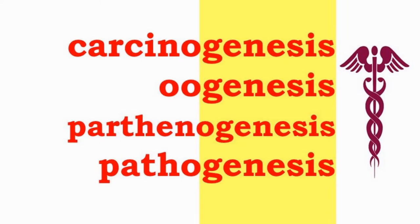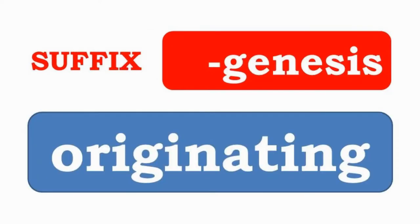Carcinogenesis, Oogenesis, Parthenogenesis, and Pathogenesis have the suffix -GENESIS, which indicates taking origin from something.